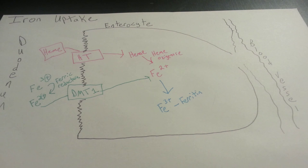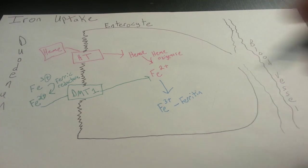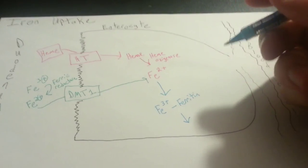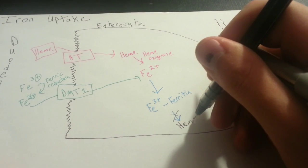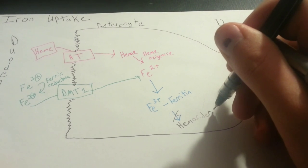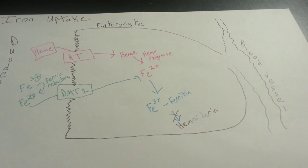However, if ferritin gets acted upon by a lysosome, it can be degraded into hemosiderin. And this is a less reversible means of storing iron. And this can cause problems like iron overload, where you can have anything from cardiomyopathy to liver cirrhosis, diabetes, even joint disease, just because of this hemosiderin. And you don't really see hemosiderin unless you've got iron overload or some other problem with your iron metabolism.